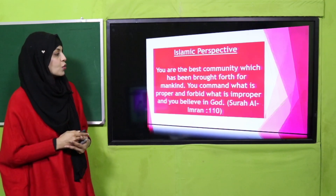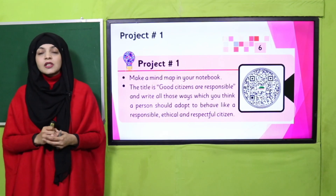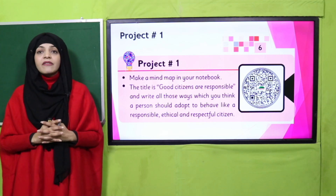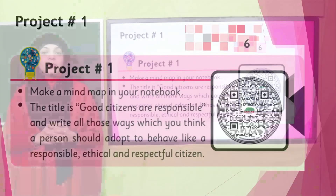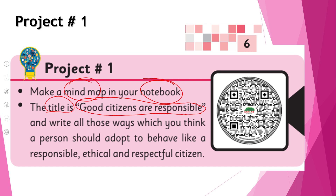Now let's move forward towards your project. This is project number one and it is given on page number six. Let's quickly have a look at what the project says: make a mind map in your notebook. The title is 'Good Citizen — Citizens Are Responsible,' and write all the ways which you think a person should adopt to behave like a responsible, ethical, and respectful citizen.